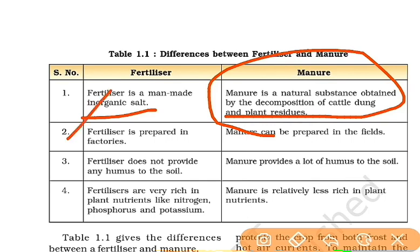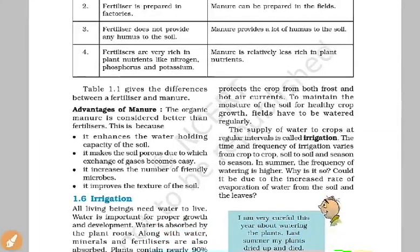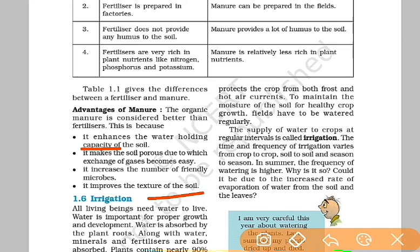Next, we prepare fertilizers in factories and in fields. This is humus — it contains micro-organisms. Micro-organisms in manure help prepare nutrients. Fertilizers provide artificial nutrients: nitrogen, phosphorus, potassium, etc. The advantage of manure is that it improves water retention in the soil. It will improve the texture of the soil. Next, we can use the irrigation method.